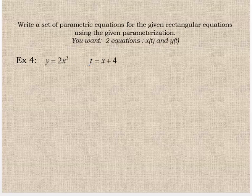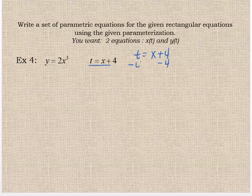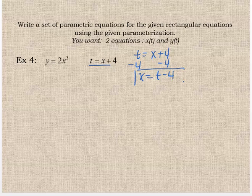Last example. Starting here. If t equals x plus four, I want x by itself. So I'm going to subtract four. So x is going to equal t minus four. There's the x equation.